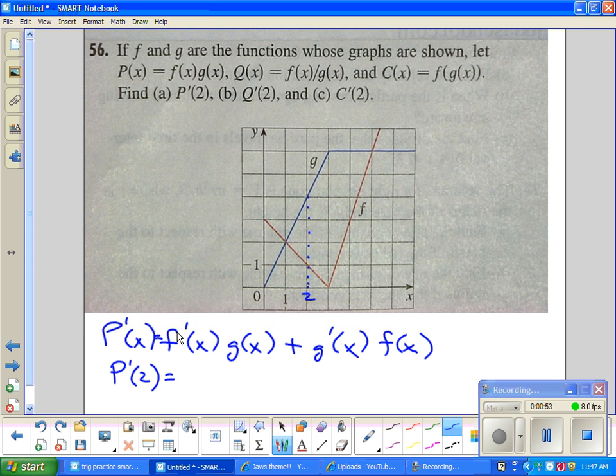g of 2 is 2, 3. You guys agree g of 2 is 4. You agree f of 2 is 1. Now f prime of x. What's the derivative tell us? Slope.